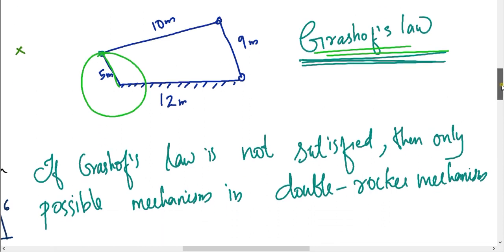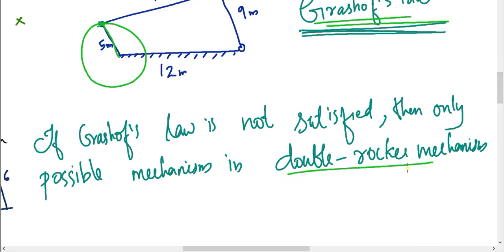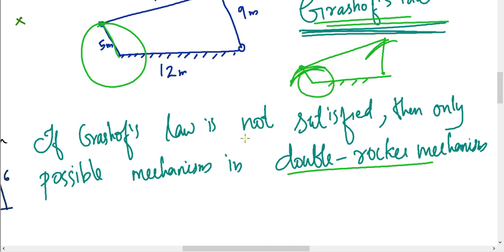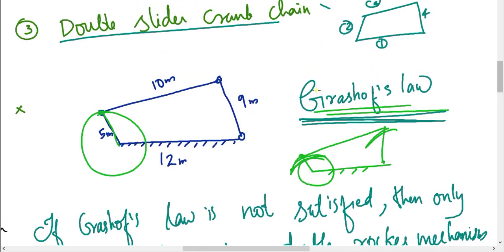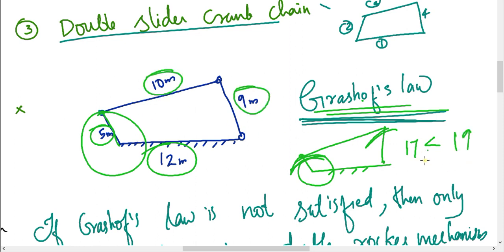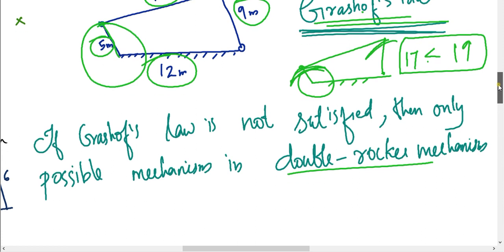In this example, there is a double rocker mechanism. For continuous motion, Grashof's condition must be satisfied: the sum of the smallest and largest link lengths must be less than the sum of the other two lengths. Here, 12 plus 5 equals 17, which must be less than the sum of the other two lengths, which is 19. Since this condition is satisfied, there are two possible inversions where one link will have continuous rotation.